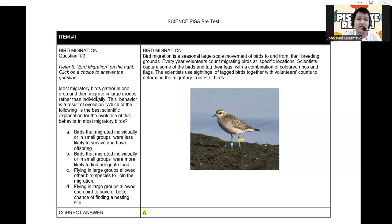But before discussing the best possible answer, let us try to look at the following options A, B, C, and D. Let's try to compare them. Let's try to read option letter A. Birds that migrated individually or in groups were less likely to survive and have offspring. Because this has a lesser possibility of survival when they are in a smaller or individualized system. So that's mainly the reason why this is the most or the best possible answer.